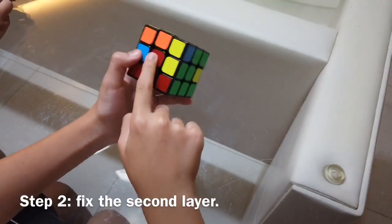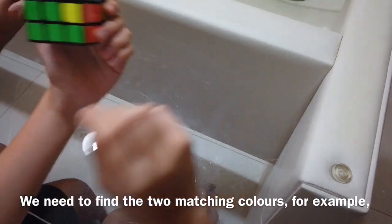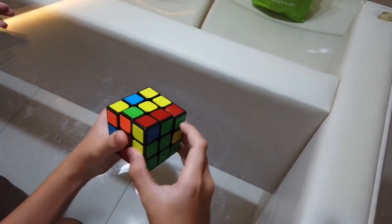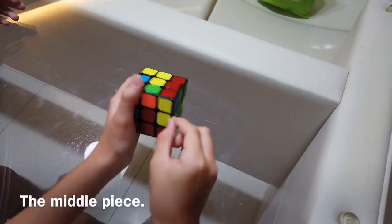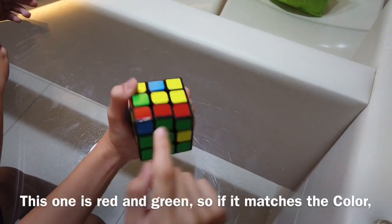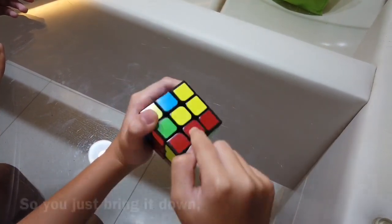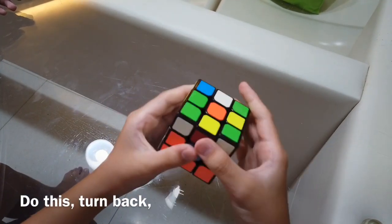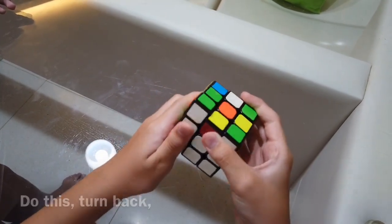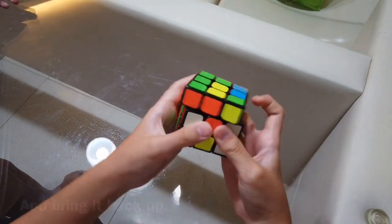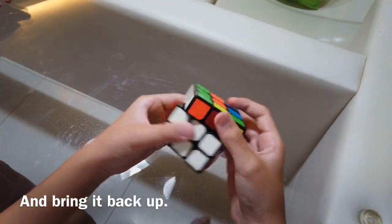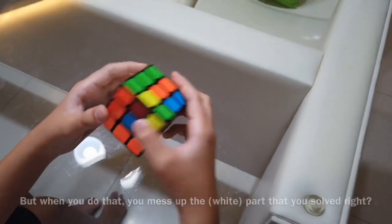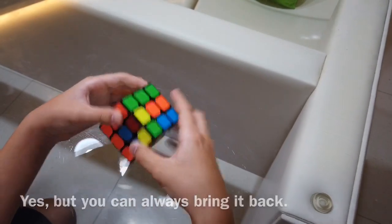Time to fix the second layer. We need to find the two matching colors. For example, red and green. So we have to find red and green, which is the middle piece. This one looks like red and green. So if it matches the color, just bring it down. Do this. Turn back. Bring it down. Turn the opposite way. And then bring it back up. But when you do that, you have to mess up the white part you solved, right? Yeah, but you can always bring it back up.